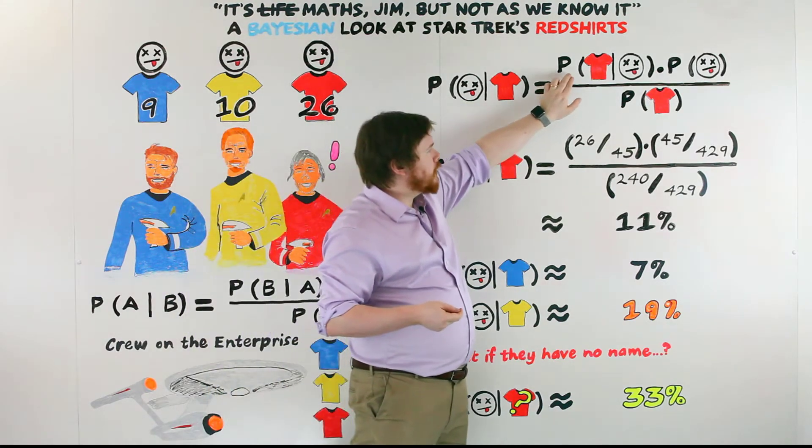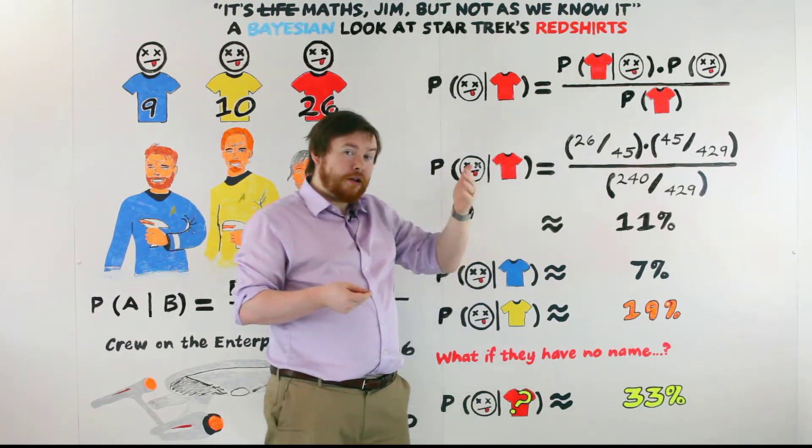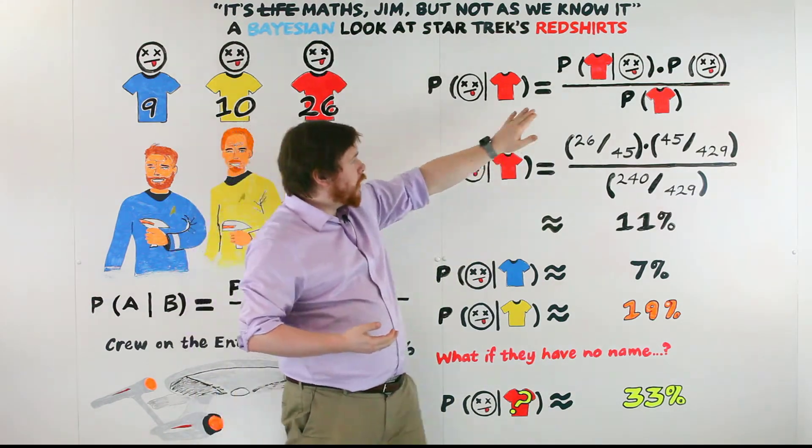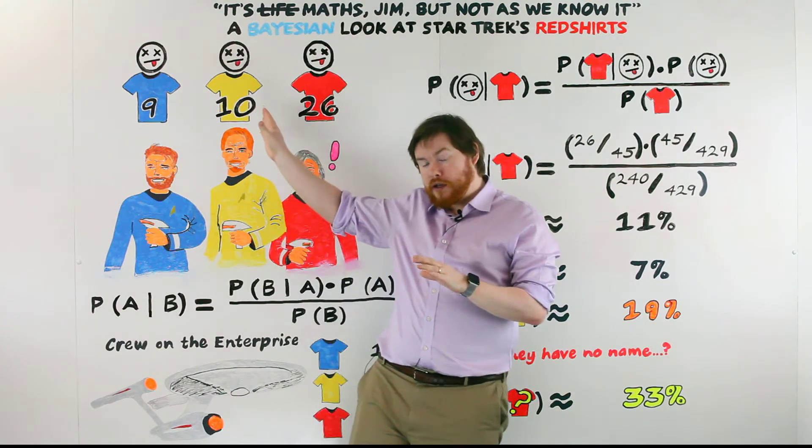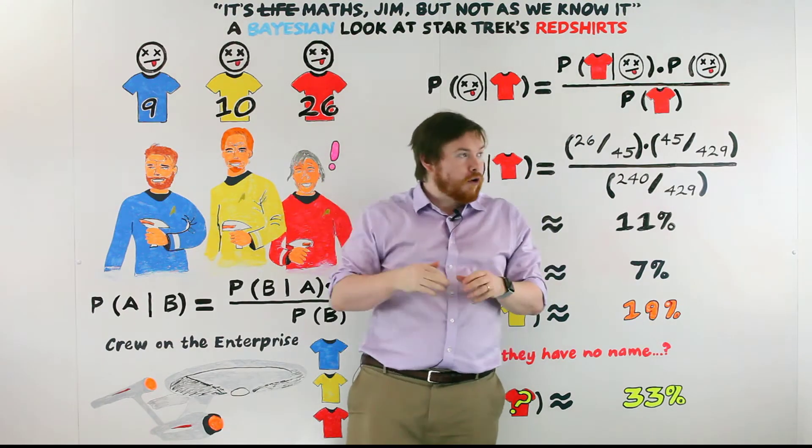The first one is the likelihood function, and that's telling us what is the probability that somebody was wearing a red shirt given that they died. And that would be our original data here. So that would be our 26 red shirts out of 45.